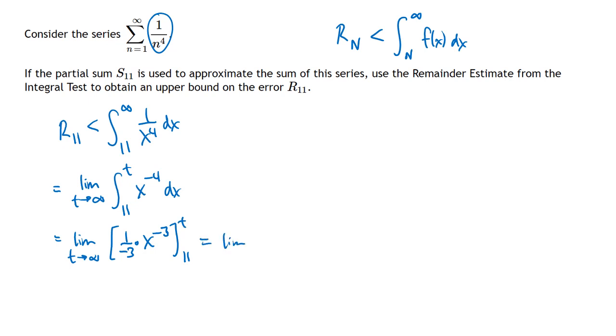So that'll give us the limit as t goes to infinity of minus 1 over 3t cubed, and then minus a minus is a plus, 1 over 3 times 11 cubed. Now as t goes to infinity, 1 over 3t cubed is going to go to 0, and so in my limit I'm going to get 1 over 3 times 11 cubed, and that's my upper bound for my error.